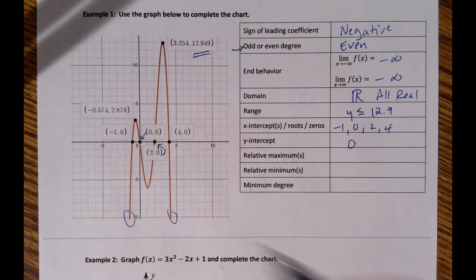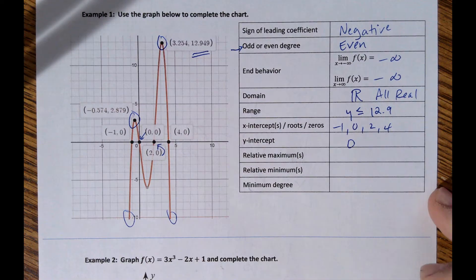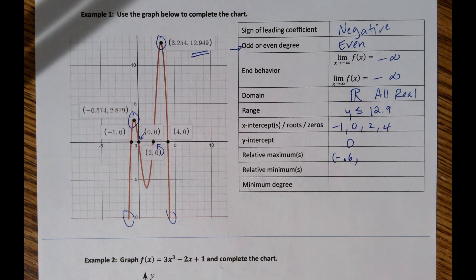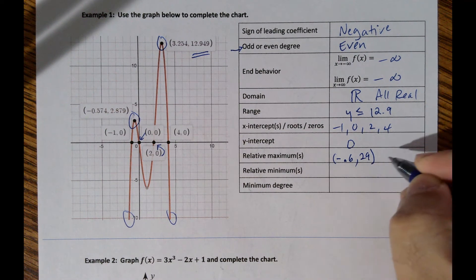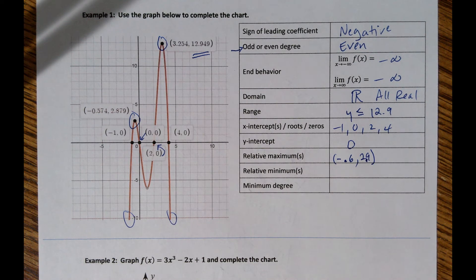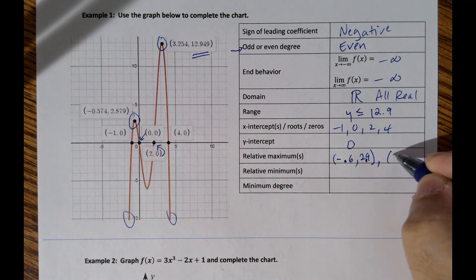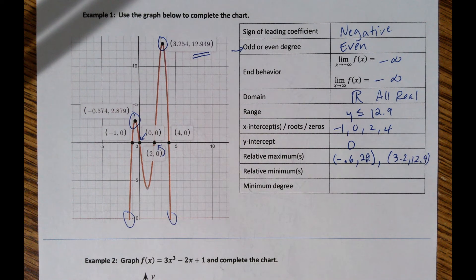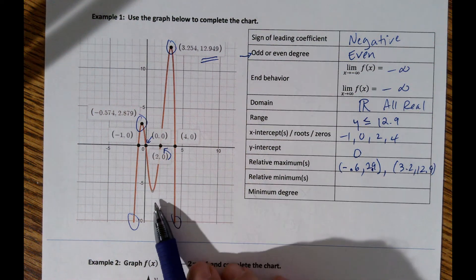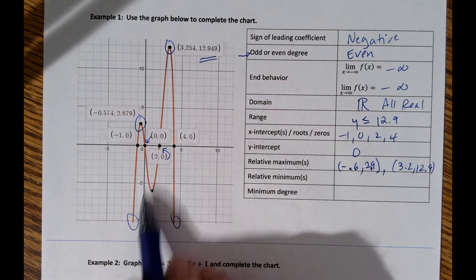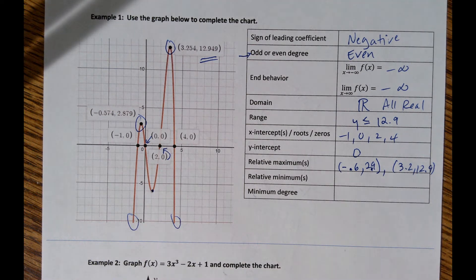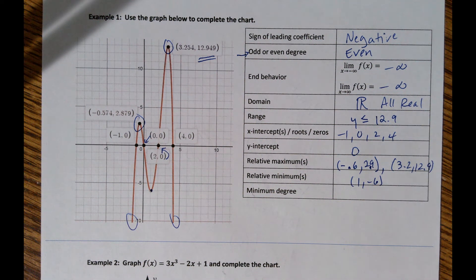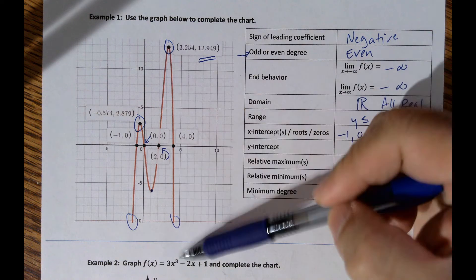There are two relative maximums: one at approximately negative 0.6 comma 2.9, and another at 3.2 comma 12.9. The relative minimum is at 1 comma negative 6. Counting direction changes — one, two, three, four — gives a minimum degree of four.